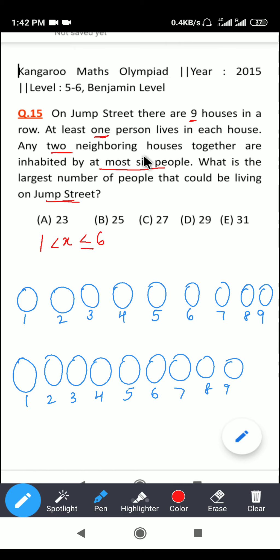So we actually need to find the largest number of people. Now I can write here six. So if I write here six, that means in the second house it will be zero because they are saying the at most, the maximum number of people in the two houses cannot exceed six. But I cannot write zero because they are also saying that at least one person lives in each house, right?